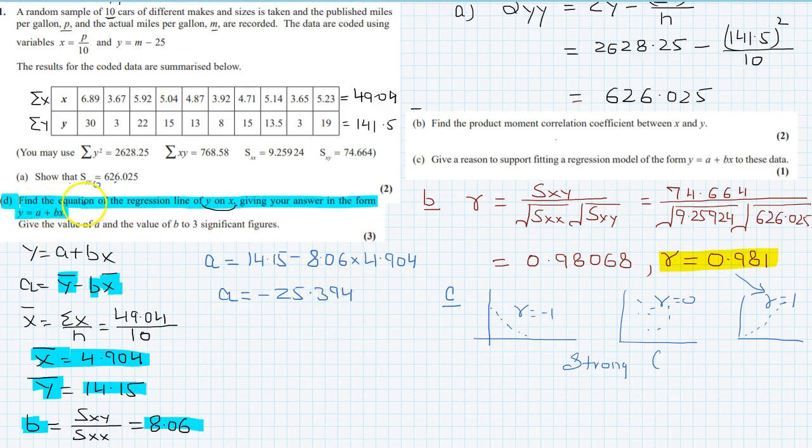So the equation of regression line y on x will be y is equal to minus 25.394 plus 8.06x. So this is the equation of line of regression. Up to three significant figures, you can write y is equal to minus 25.4 plus 8.06x.